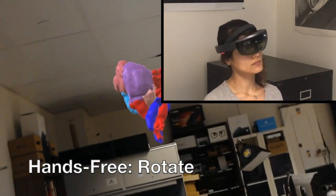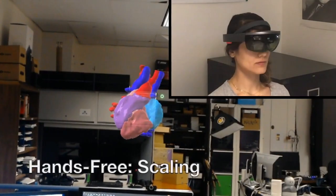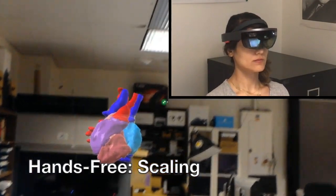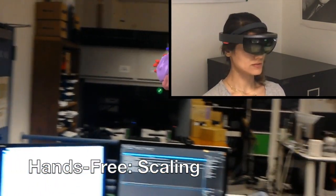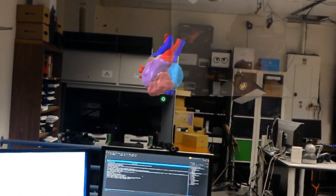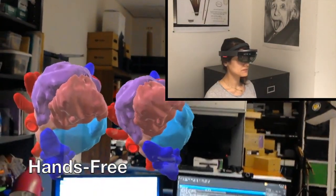As the user rolls their head, the model will begin to rotate about an axis from the model center to the user's head. When scaling, as the user rotates their head towards the right or top of the model, it will scale up. As the user rotates their head towards the left or bottom of the model, it will scale down. Please see our paper for a full description of how the techniques were implemented.